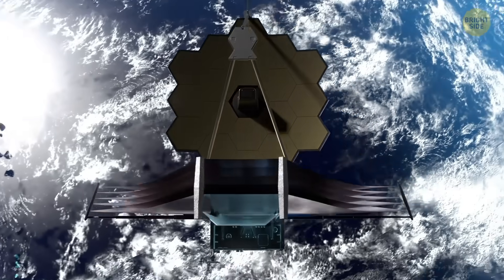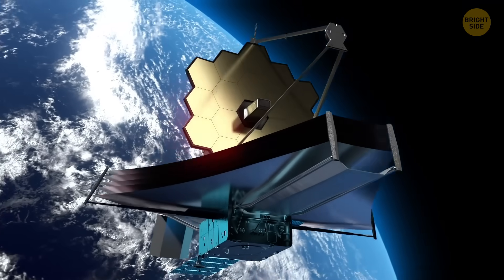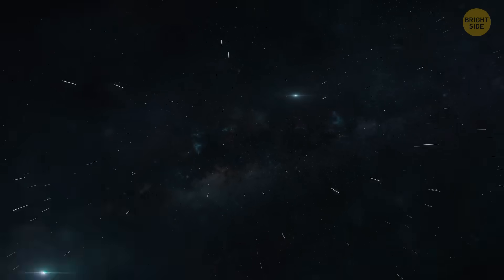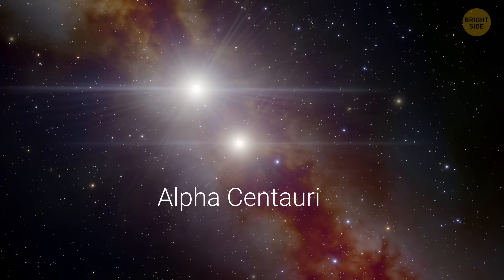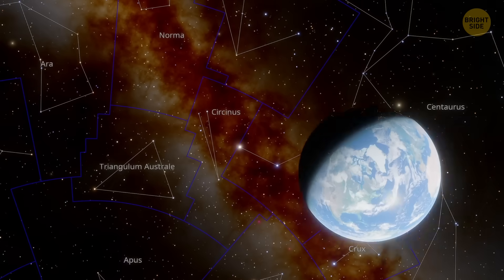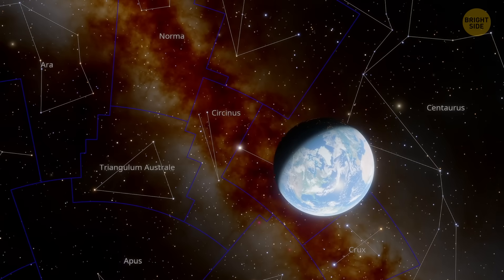Scientists, thanks to the mighty James Webb Space Telescope, might have found a planet in almost the exact spot where Pandora is set in the movie. It's the same star system, Alpha Centauri, our closest neighbor, just four light years away.